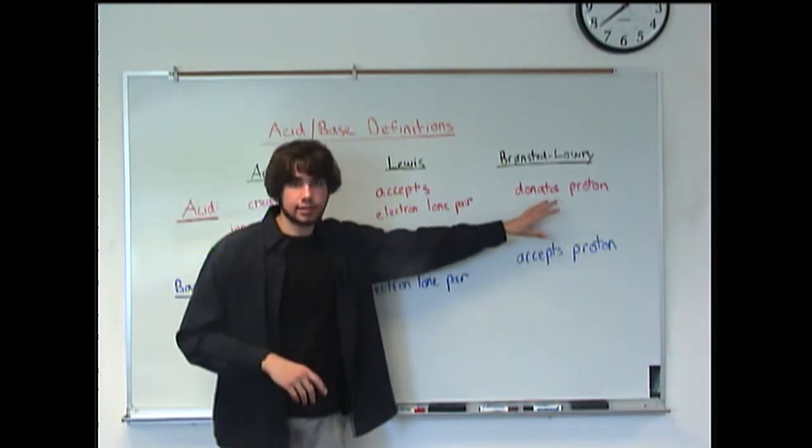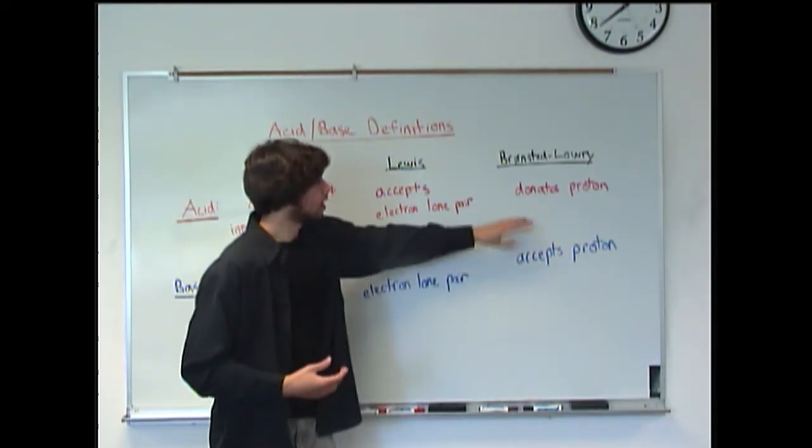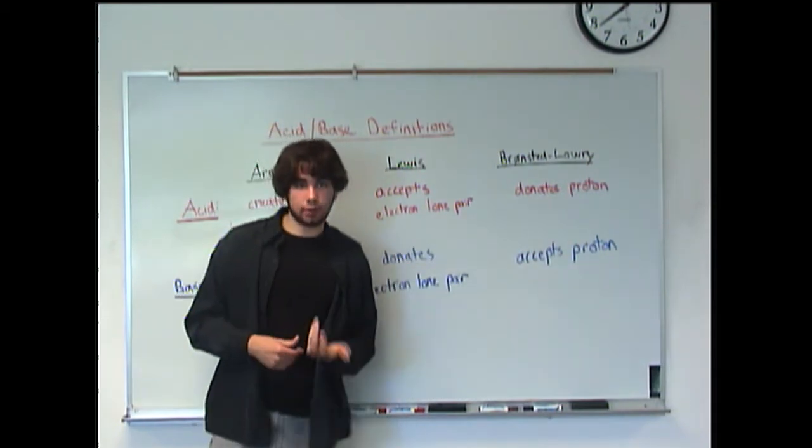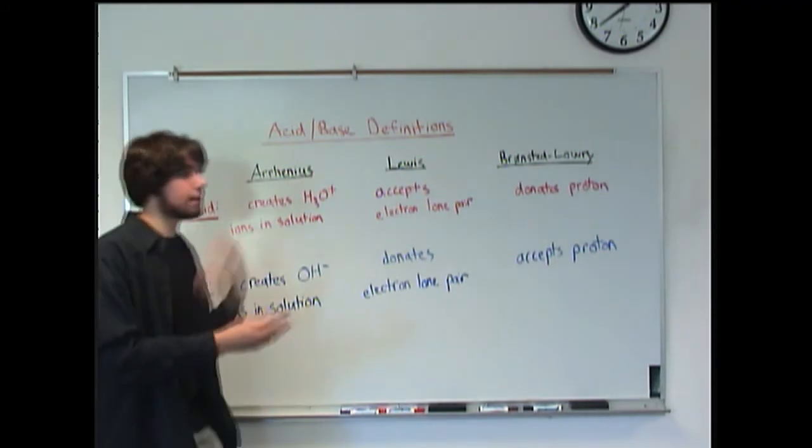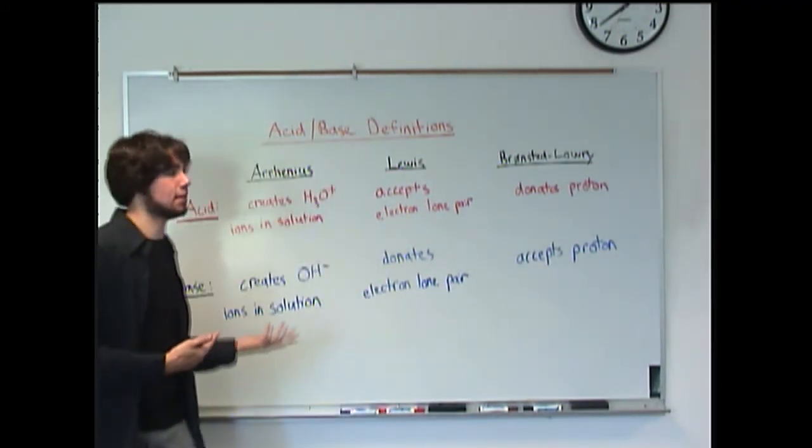So if you think about conjugate acids and bases, if you go watch that episode, you'll be able to understand more clearly what the Bronsted-Lowry definition is. Even though there's a whole bunch of different definitions, there are just different ways to look at what an acid and a base is. It's all pretty simple.